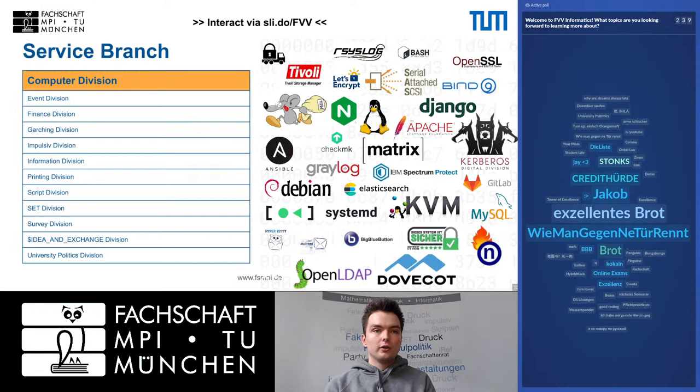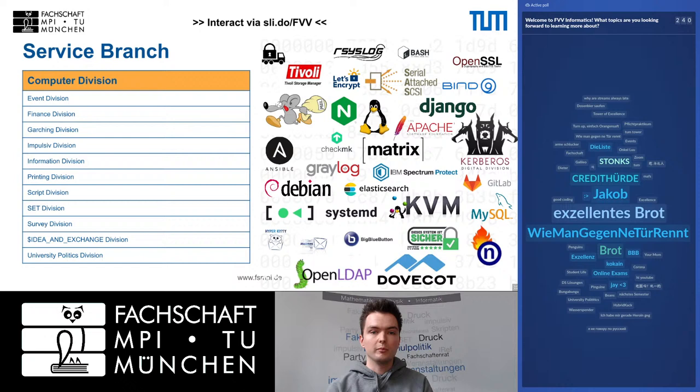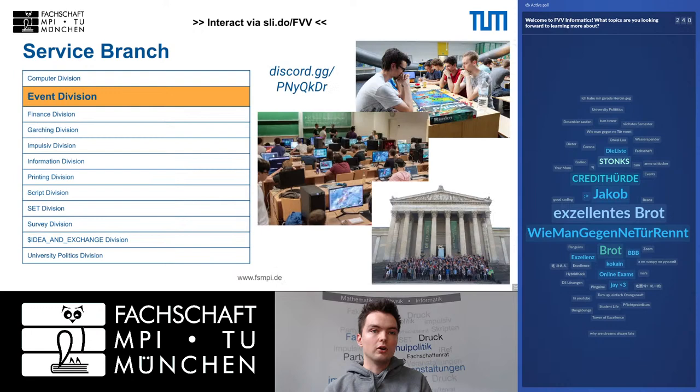The Service Branch is divided into several divisions that each fulfill a certain task. For example, we have the Computer Division that provides our whole infrastructure for the Student Council, our main servers, and not only for the Informatics Student Council but also for the Student Council at TUM level.